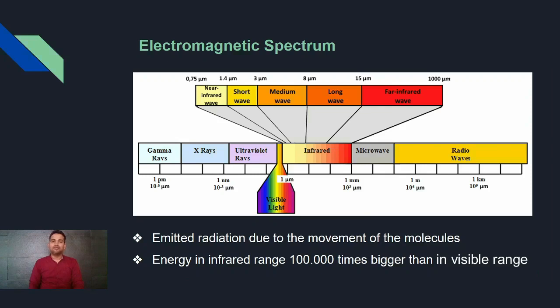In this electromagnetic spectrum, we can see that there is a small portion of visible light covered in the spectrum. And beyond that, there is infrared energy covered, ranging from 0.75 to 1000 microns, which is 100 times greater than visible light. Based on these different wavelengths, it is classified into near infrared waves, short wave, medium wave, long wave and far infrared waves.